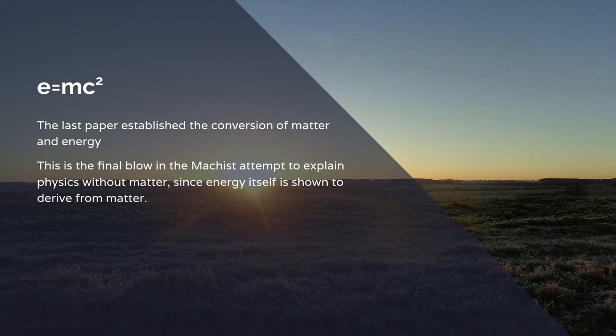The final papers lead the way to his formula E equals mc squared, which establishes that the energy and matter are interconvertible, that matter can be converted into energy, and this is the final blow to the Marcus attempt to explain physics without matter, since energy itself is shown to derive from matter.